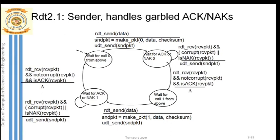In RDT 2.1, the solution is given for the major drawback present in RDT 2.0. In RDT 2.1, a garbled or corrupted acknowledgement is handled. Along with that, duplicate packets arriving at the receiver are also handled in RDT 2.1. So RDT 2.1 handles duplicate data arriving at the receiver. Let's see how the sender handles garbled acknowledgements.